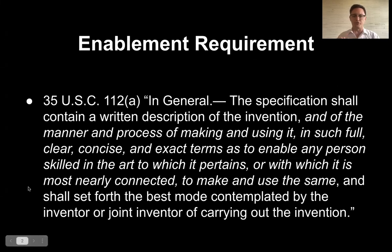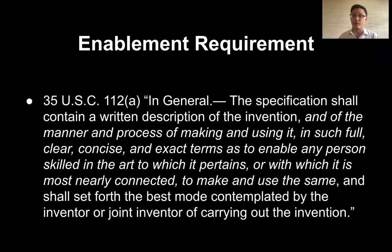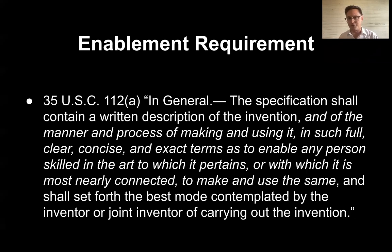In order for the specification of the patent to be adequate, there are three different requirements. The first is the enablement requirement, which says essentially that the disclosure has to enable a person having ordinary skill in the art — a PHOSITA — to actually practice the patent in question. In other words, you have to tell the reader what it is that you've invented or discovered and how they can do it. You have to give them enough information that they can actually do what you've invented or described.